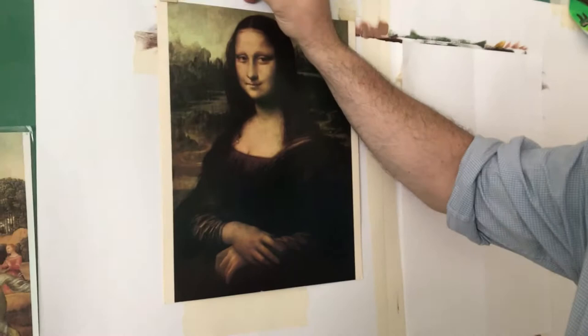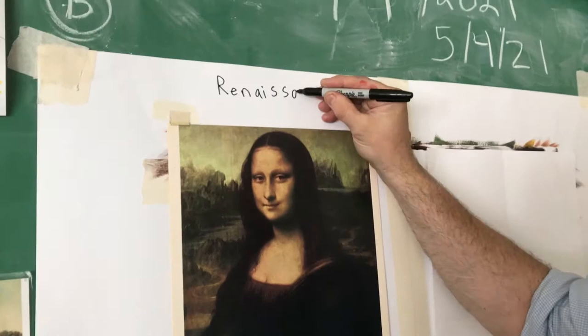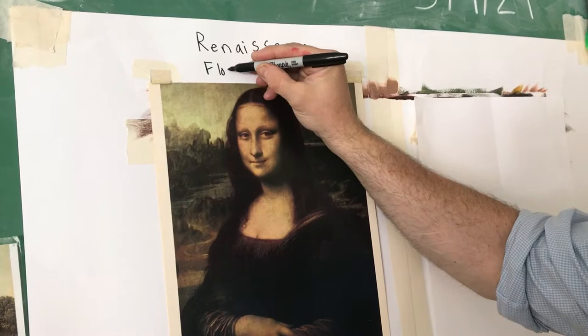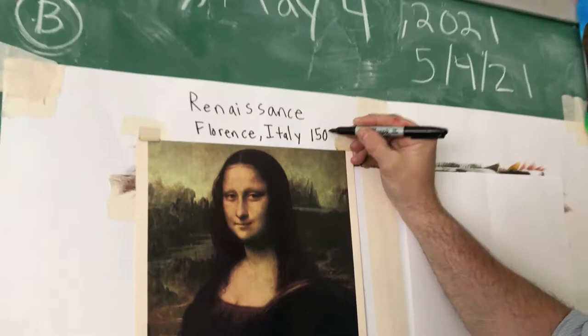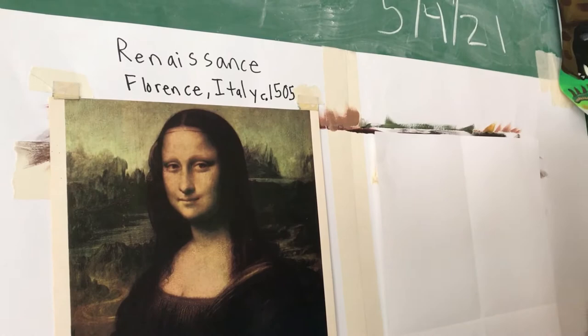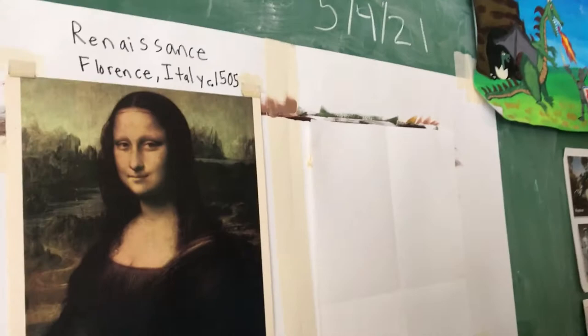This is a short introduction lesson for Leonardo da Vinci and the Mona Lisa, the most famous portrait in the world. It was painted during the Renaissance, in Florence, Italy — that's a city in Italy — in about 1505. 'Circa' means about.